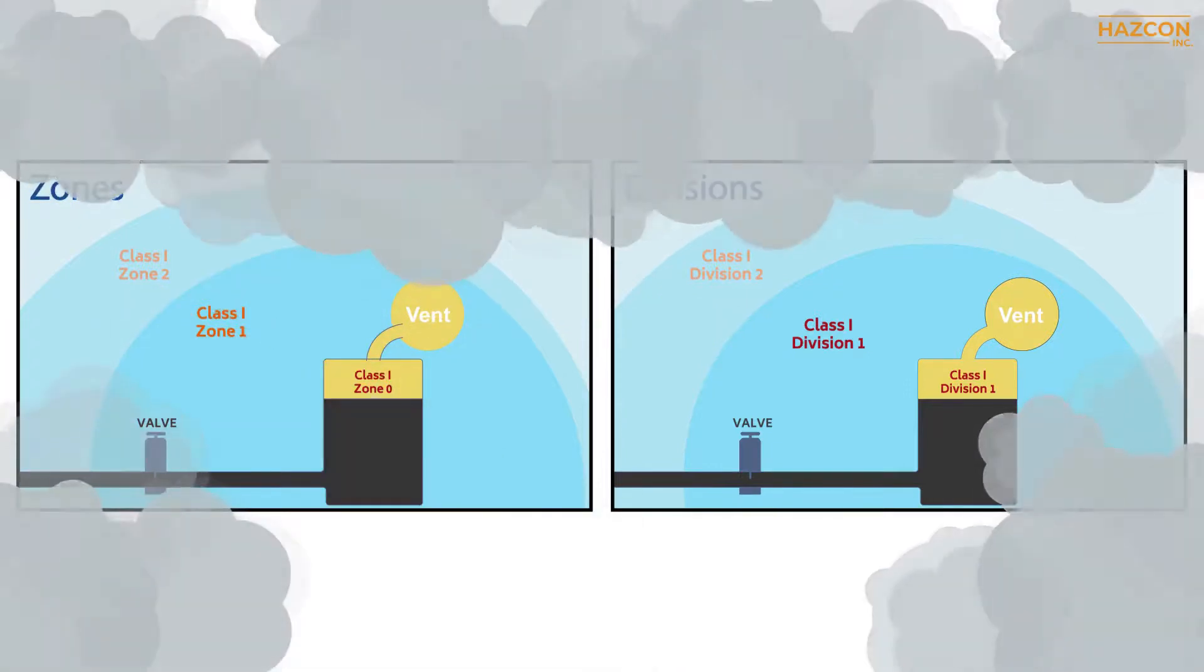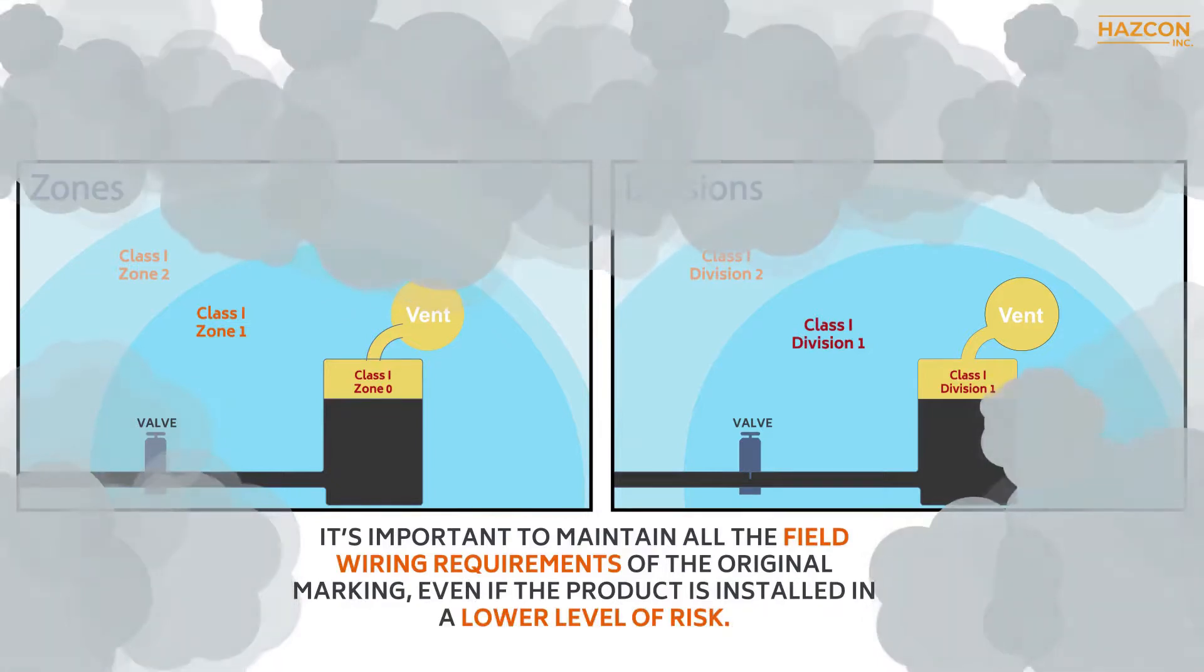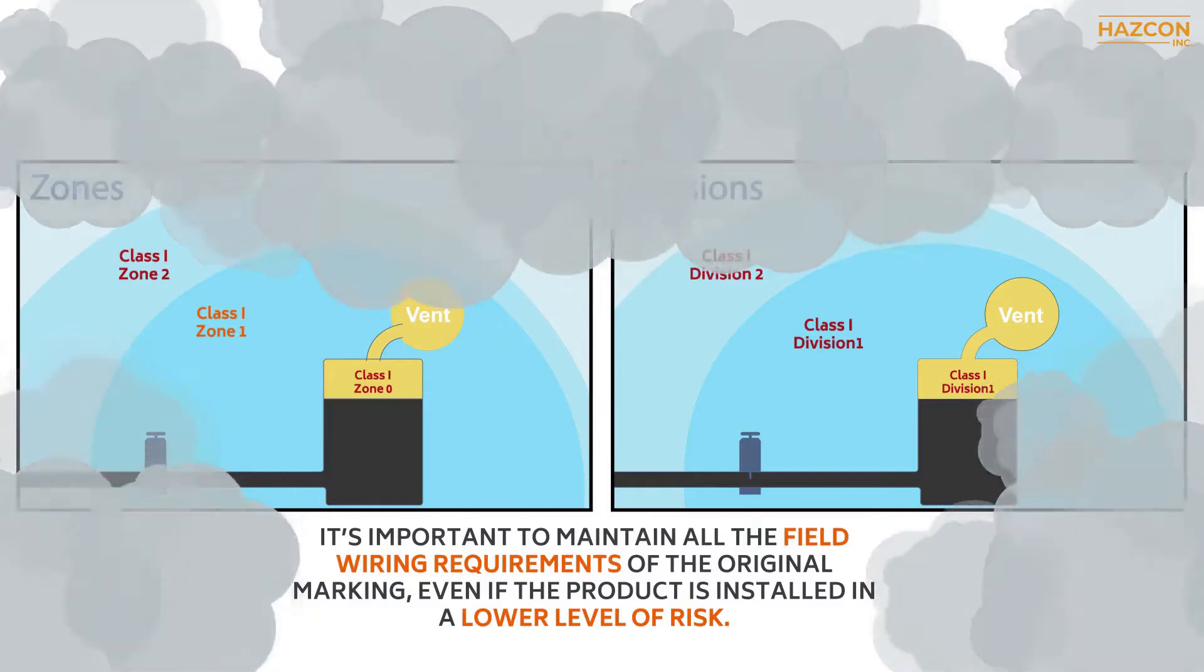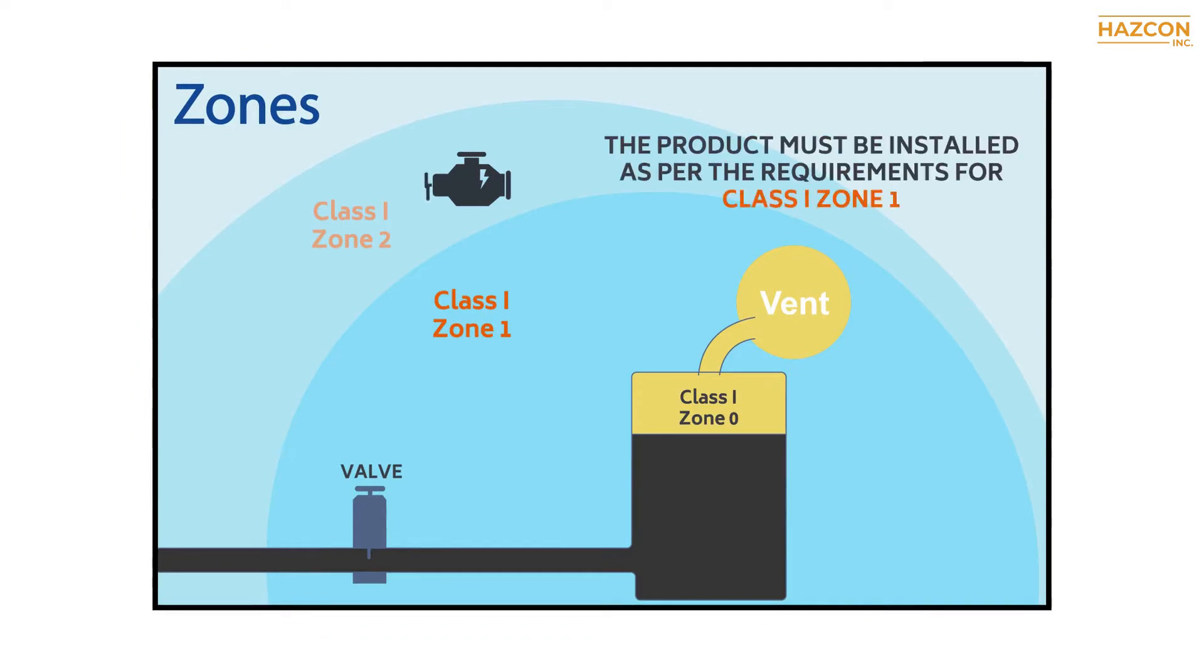We must also note that when products with a higher level of safety are to be installed in a lower level of classified area, it's important to maintain all the field wiring requirements of the original marking, even if the product is installed in a lower level of risk. An example of this is a class 1 zone 1 product, which is permitted to be installed in a class 1 zone 2 location. The product must be installed as per the requirements for class 1 zone 1.